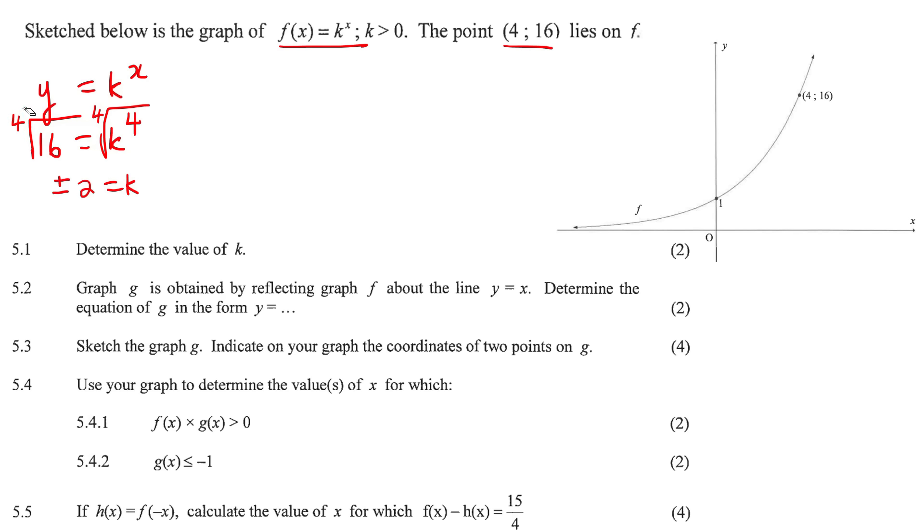The fourth root of 16 is technically positive and negative 2. Because this is an even value, you're going to have positive and negative answers. However, they told us that k is bigger than 0, so k can't be negative. Therefore k must be 2.